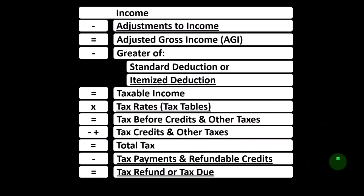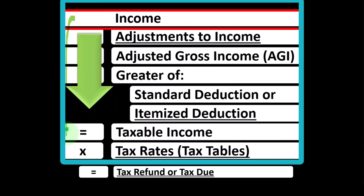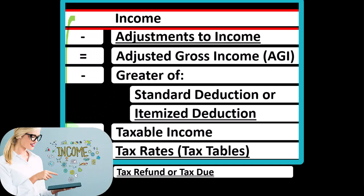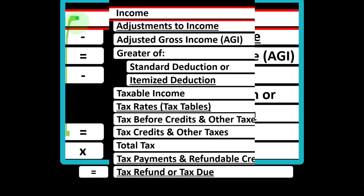Looking at the income tax formula, we're focused on line one income. The first half of the income tax formula is essentially a funny income statement. Normally an income statement has income minus expenses resulting in net income. Here we have income minus various deductions resulting in taxable income. When looking at the income line item, we typically want it as low as possible for taxes, so we look for things that might be exempt from income.